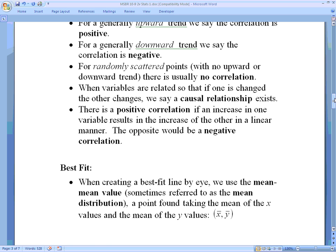Best fit. We'll be drawing numerous best fit lines throughout this unit on two variable statistics. When creating a best fit line by eye, meaning that we don't have an equation of the line, we're just looking at our data, IB always wants to make sure that we go through what's known as the mean mean value, sometimes referred to as the mean distribution. It's a single point that is defined by the average of the x data, comma, the average or mean of the y values. And you just put those two together as an ordered pair and plot that point.